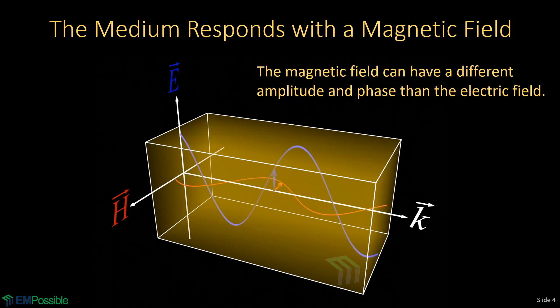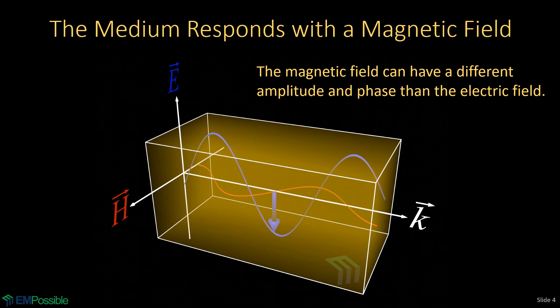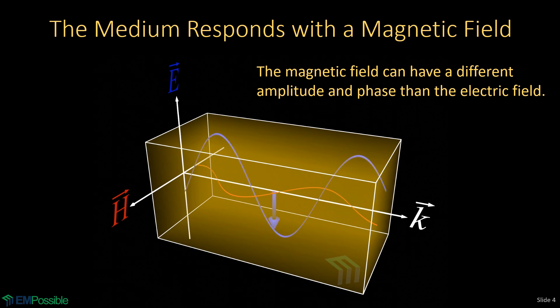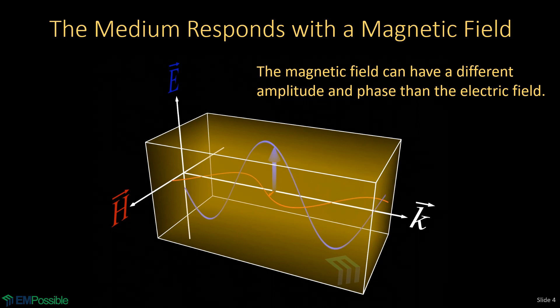I tend to think of the impedance like a scale, and it's balancing E and H. But it's a complex number because it's describing the difference in the amplitude and phase between the electric and magnetic fields.